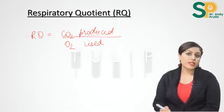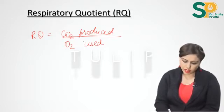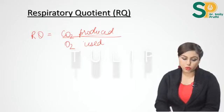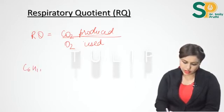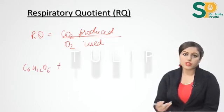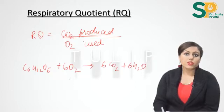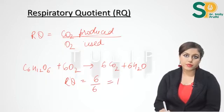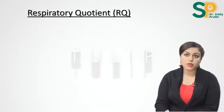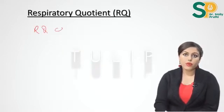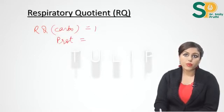In case of carbohydrates, for example glucose: C6H12O6 plus 6 oxygen gives 6 carbon dioxide and 6 water. So RQ in case of carbohydrates will be 6 divided by 6, that is 1. So RQ for carbohydrates is 1.